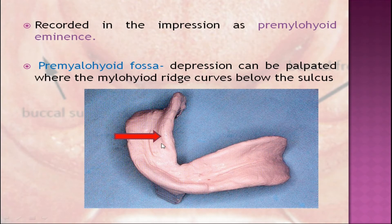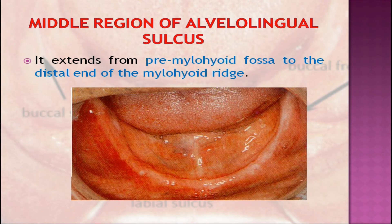It is recorded in the impression as the premylohyoid eminence. The premylohyoid fossa is a depression that can be palpated where the mylohyoid curves below the sulcus. The lingual border of the impression in this region should extend down to make contact with the mucous membrane of the floor of the mouth. When the tip of the tongue touches the upper anterior teeth, the lingual flange will be shorter anteriorly than posteriorly.